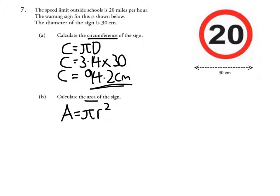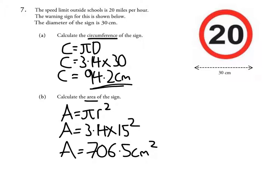If the diameter is 30, radius is half the diameter, so the radius in this case will be 15. Subbing my numbers in, I'm going to get A equals 3.14 times 15 squared. Putting that into my calculator, I get my answer to be 706.5 centimeters squared.